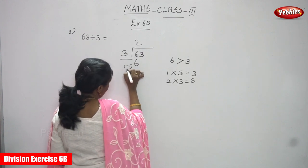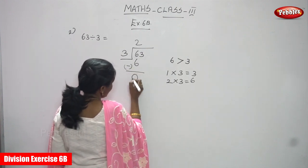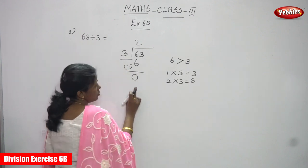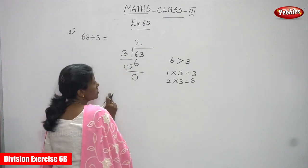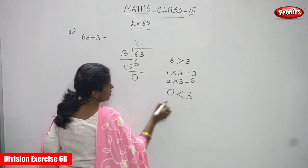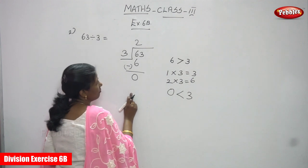Now you are going to subtract. 6 minus 6, you know that's 0. Now compare 0 and 3. 0 is less than 3, so it is not enough to divide.